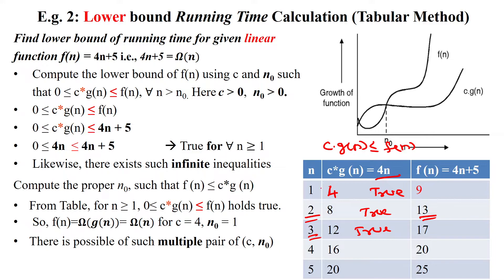So from n equal to 1 onwards, this c times g(n) is always less than or equal to the given f(n), which is satisfying the condition for all values n greater than 1, which is true.